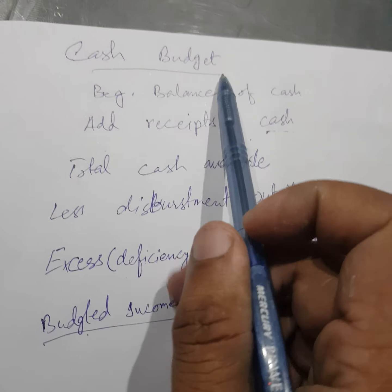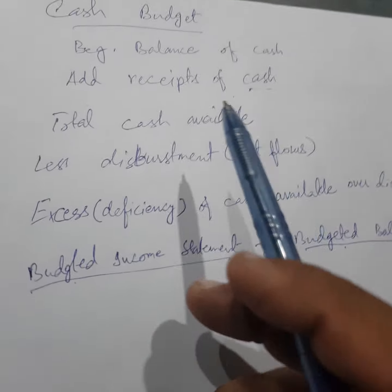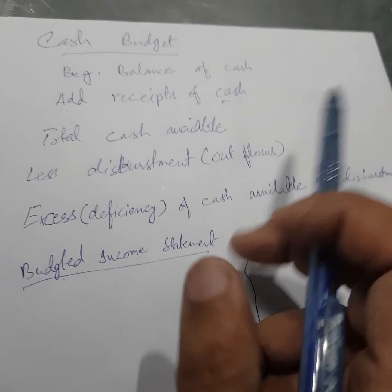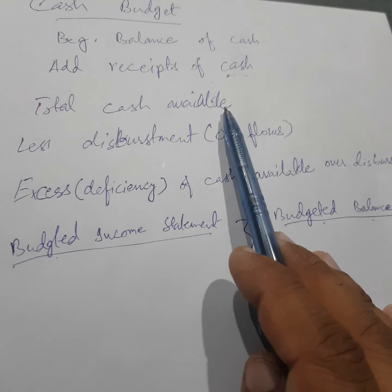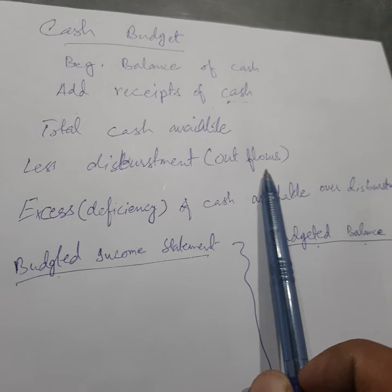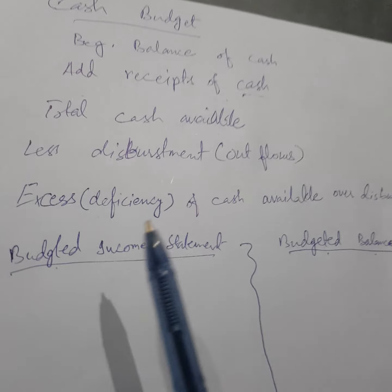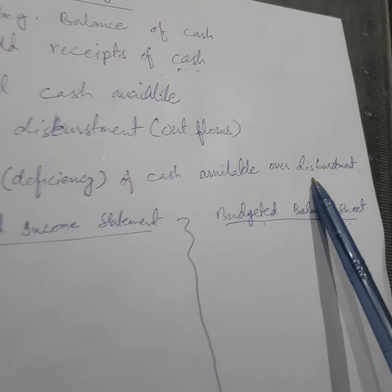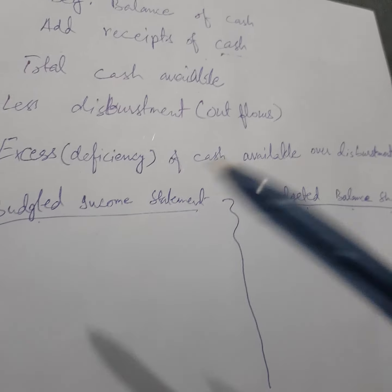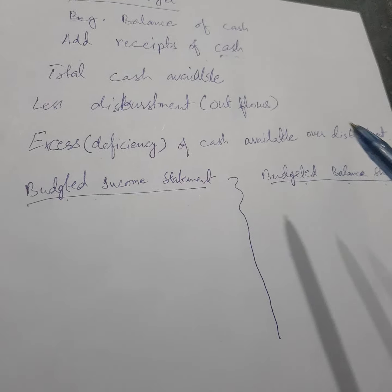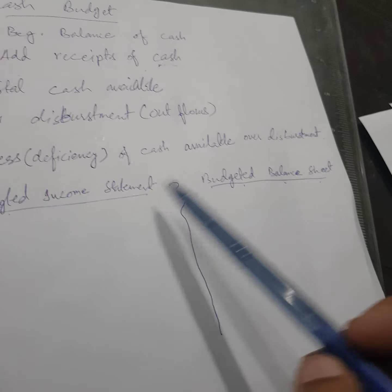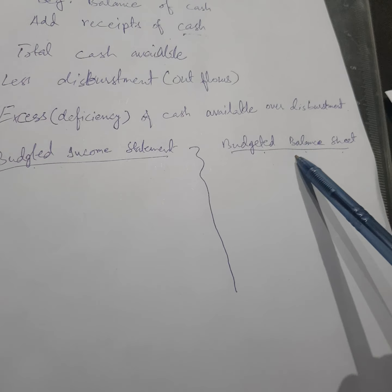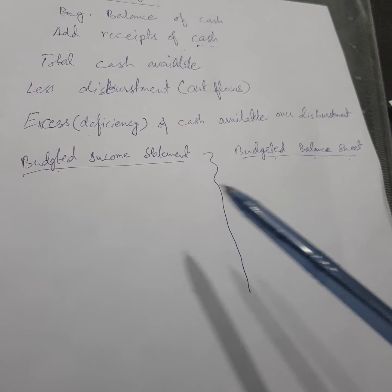Then comes the concept of the cash budget: we use the beginning balance of cash, add receipts of cash to get total cash available, then deduct disbursements — cash outflows — to get the excess or deficiency over disbursements. The budgeted income statement and budgeted balance sheet are also part of the master budget. You are already aware of the format of the income statement and balance sheet — preparing them will be your task.